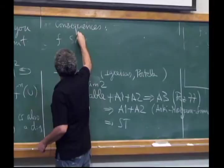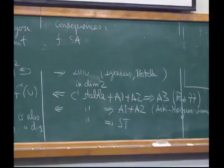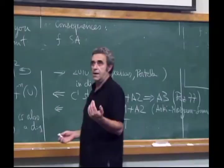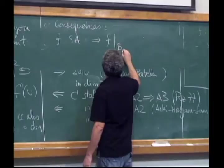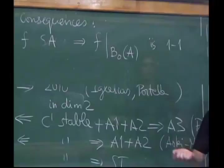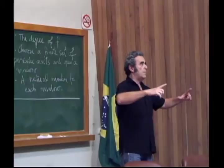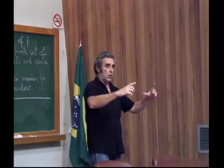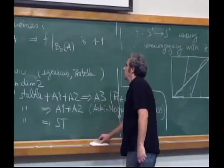If f is Strong Axiom A, then attracting sets are one-to-one, so the restriction of f to the immediate basin of an attracting set must also be one-to-one — it is a diffeomorphism. So if you find a structurally stable map in dimension two, in the immediate basin of an attractor the map is one-to-one, with pre-images that are disconnected from the immediate basin.